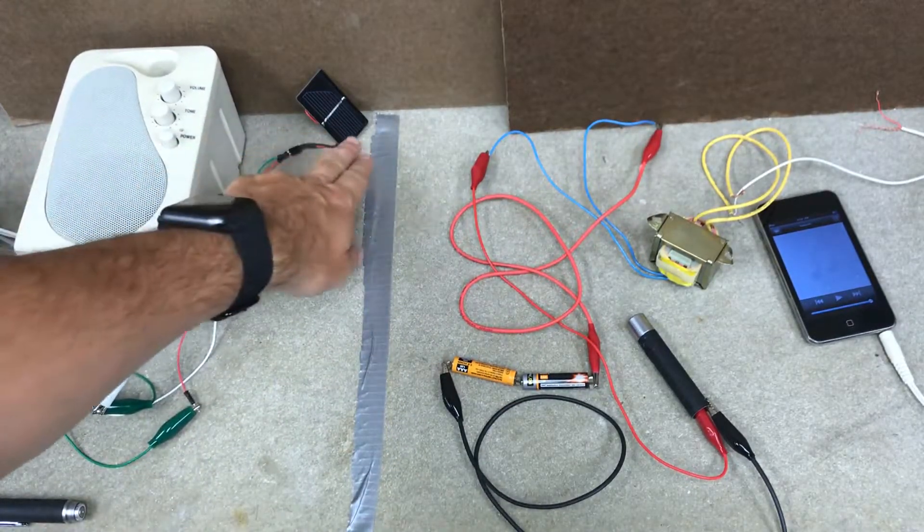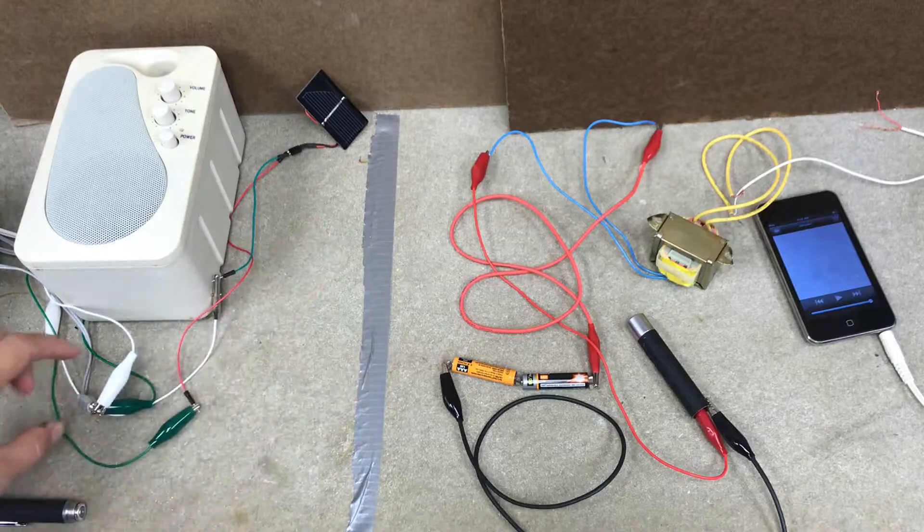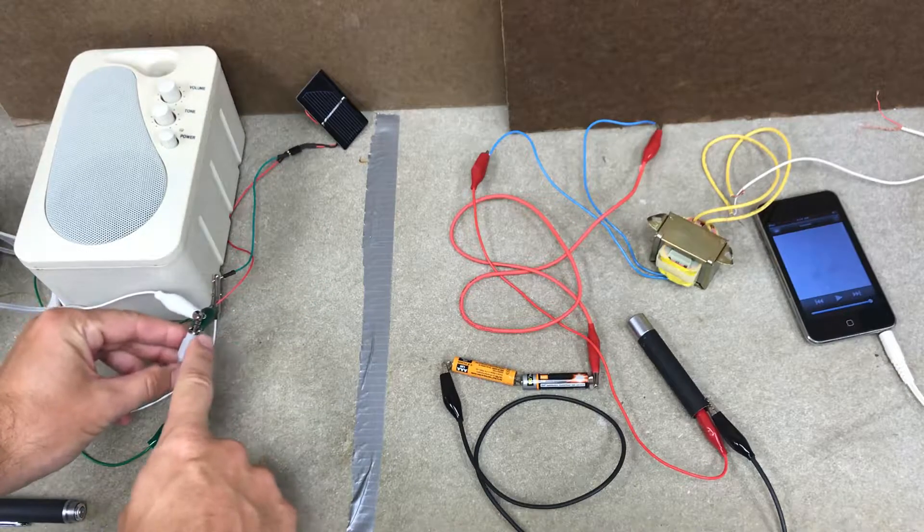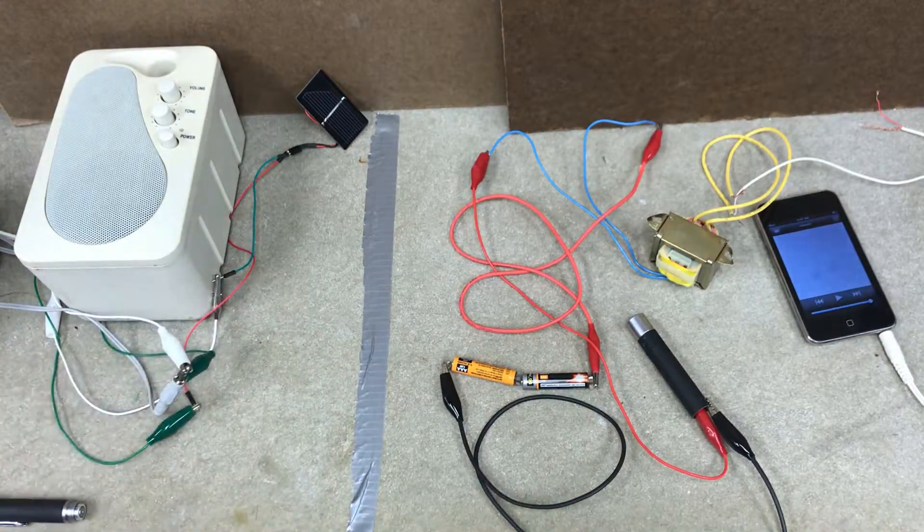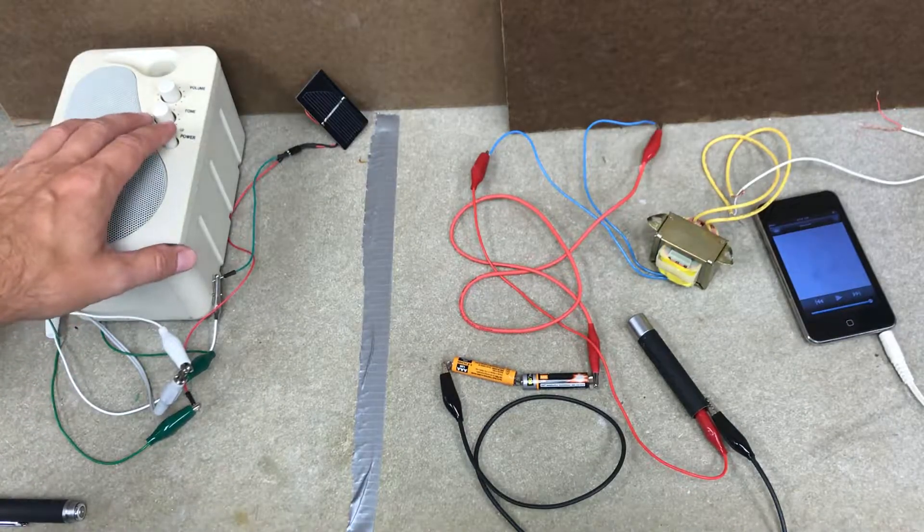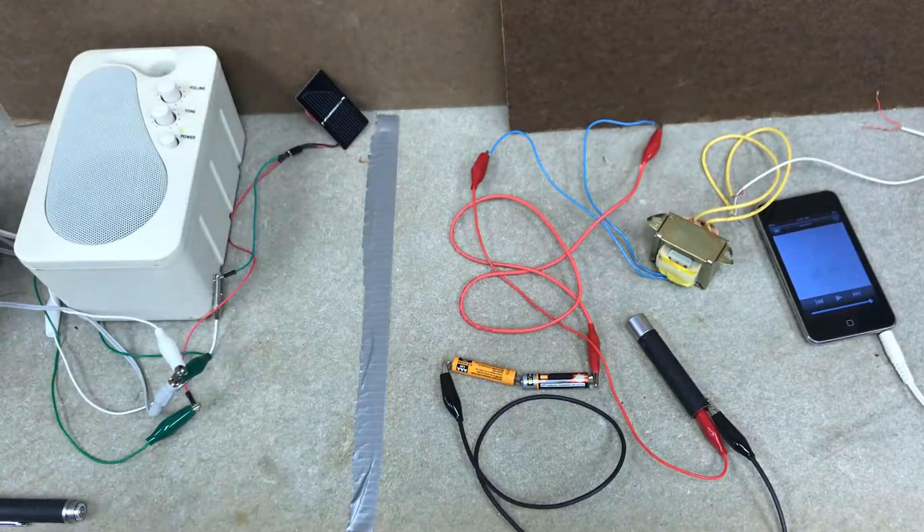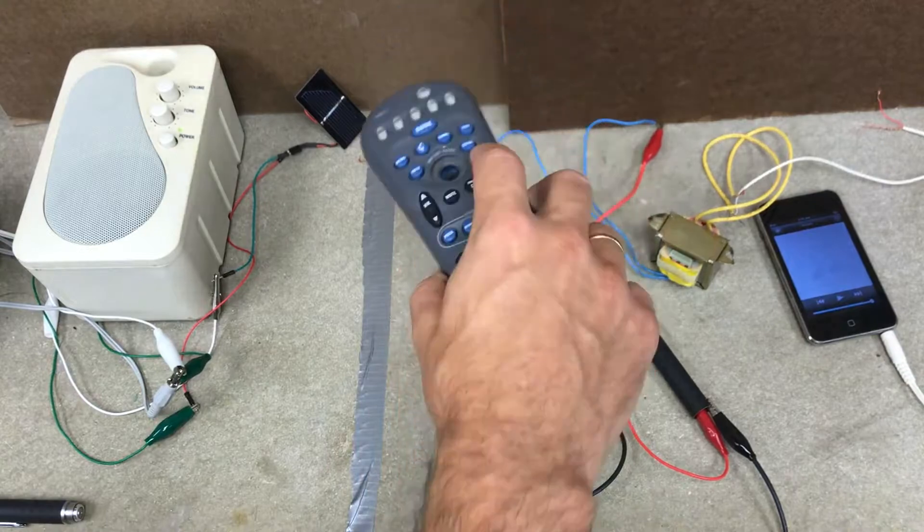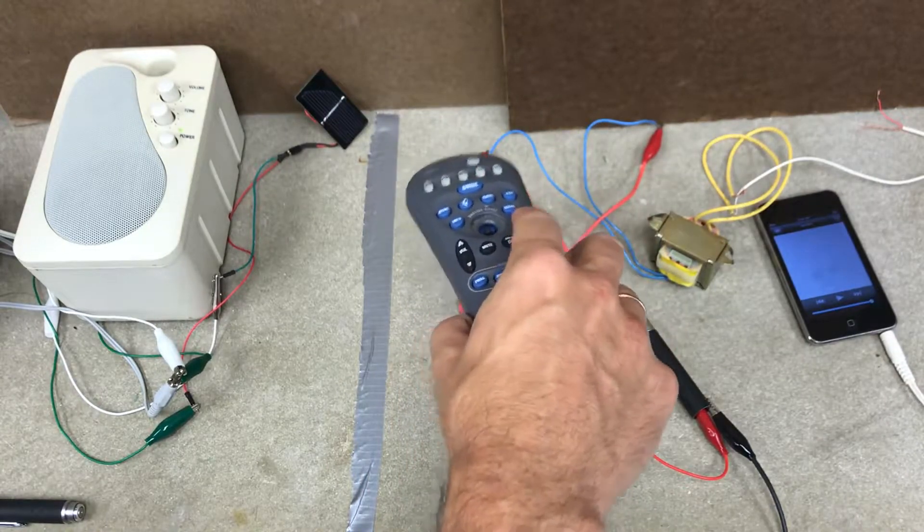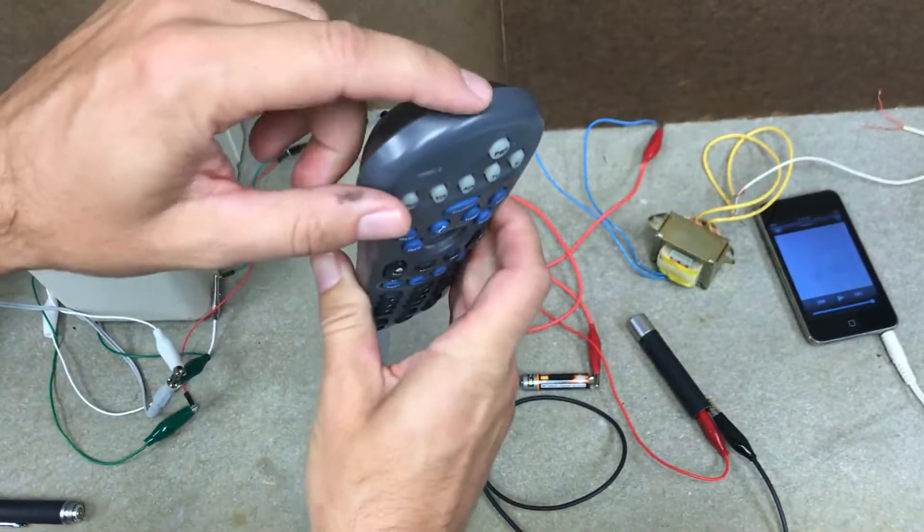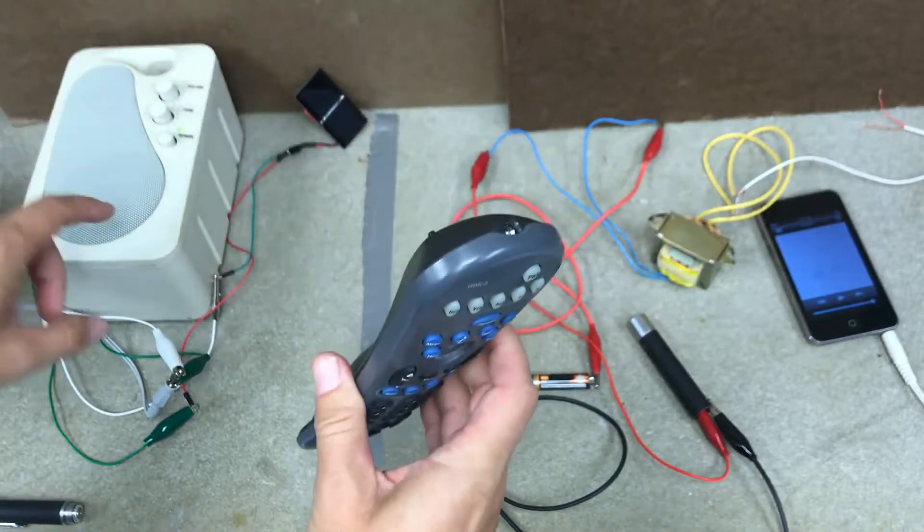I have right here a speaker and a solar cell hooked up to the jack. I've already shown this in a previous video. If I turn that on, you can hear the hum of the 60 hertz lights. You can hear the light coming out of the infrared diode.